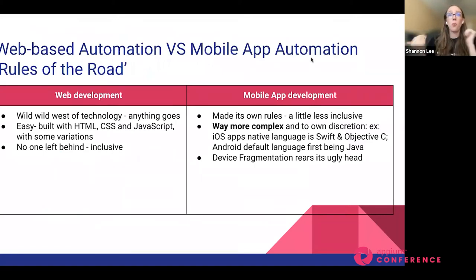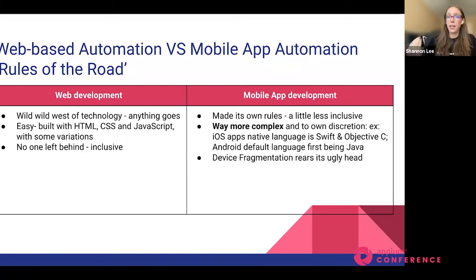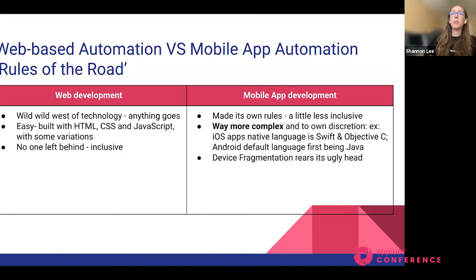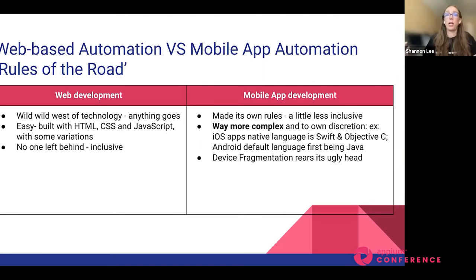Web-based and mobile application development have far different rules of the road. When web development came to play, it was a very pioneering movement — a kind of Wild West of technology where anything goes. Everyone was excited about this new discovery, more open source, sharing code and information, building commercial websites easily with HTML, CSS, and JavaScript. It was very inclusive because everyone was at the forefront of this new technology and wanted to collaborate.